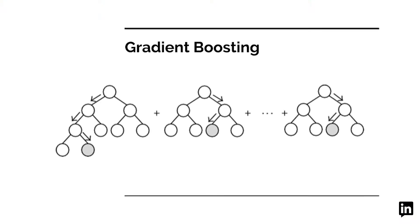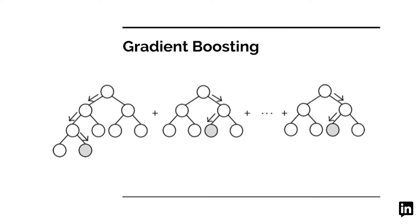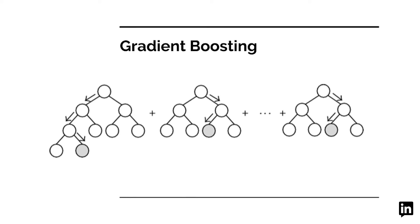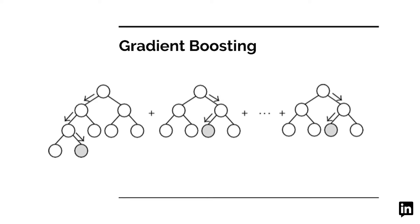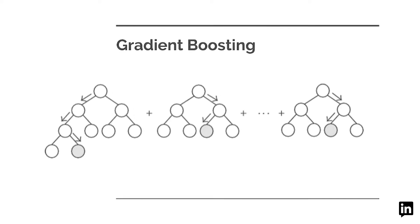Gradient Boosting is one of the most popular machine learning methods with many applications in classification and regression. It builds an additive model by a greedy stagewise procedure and forms an ensemble of weak regression models, typically regression trees.